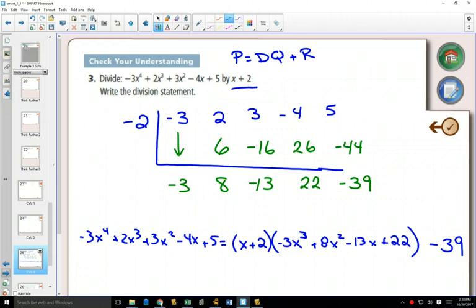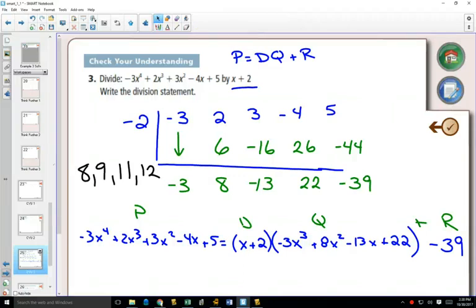Yeah, easier but more complicated at the same time. They should have a word for that. Easy-cated. Complicated and easy put together. All right, so to easy-cate your life some more, try 3b and 7. Now that's not the right numbers, sorry. I already assigned those. Try 8, 9, 11, and 12.